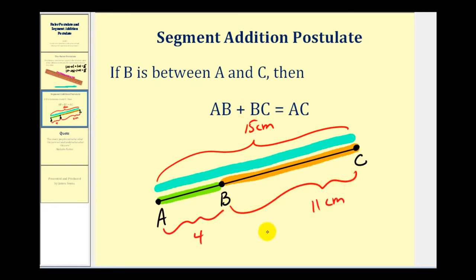So from this postulate, AB would be four, BC would be eleven, and so AB plus BC would equal AC, which is equal to fifteen.